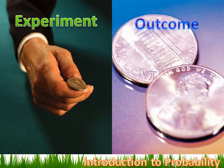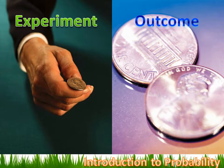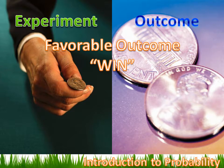There are two potential outcomes because it's a coin toss — it can only end up on heads or it can end up on tails. Now let's say you win if it ends up on heads. That means the favorable outcome — the one you're trying to find the probability of — is it landing on heads. A win is when the coin lands on heads.